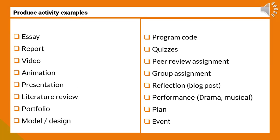The produce learning type consolidates what students have learned by producing an artifact. The activities in this learning type lend themselves to assessment. However, activities in the other learning types can also be assessed — it all depends on what is decided to include as part of the assessment mark. Examples include essays, portfolios, presentations, or design models.